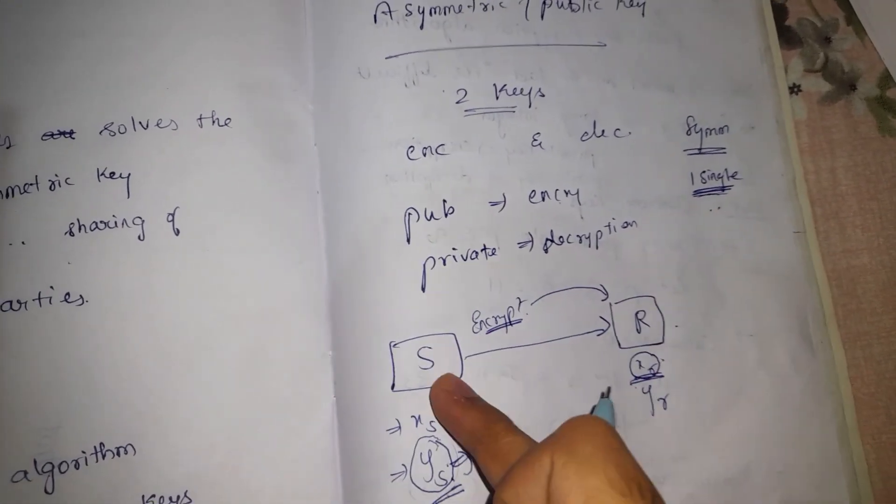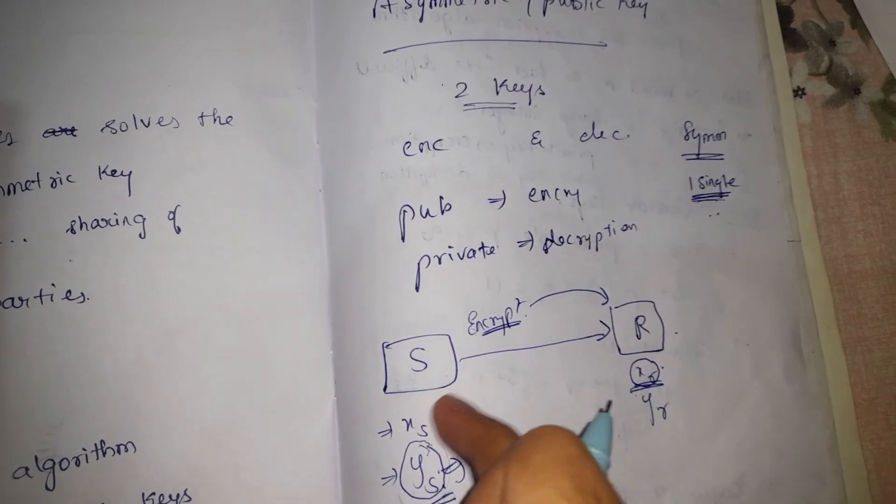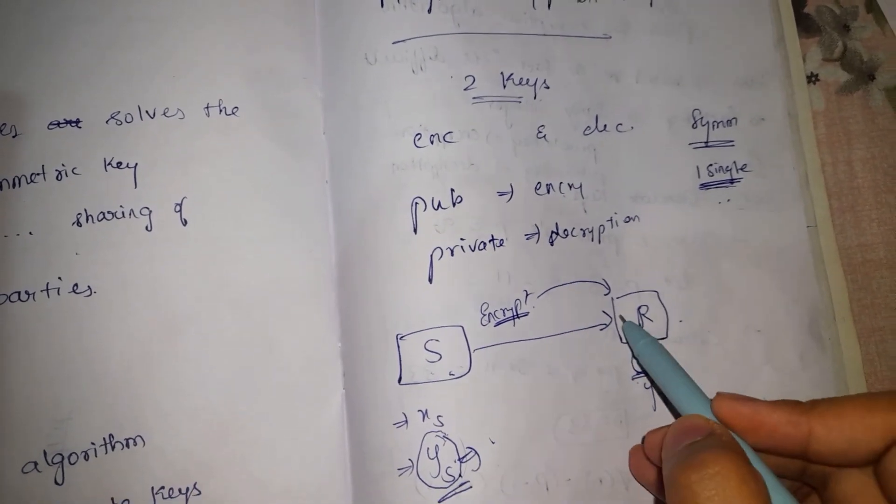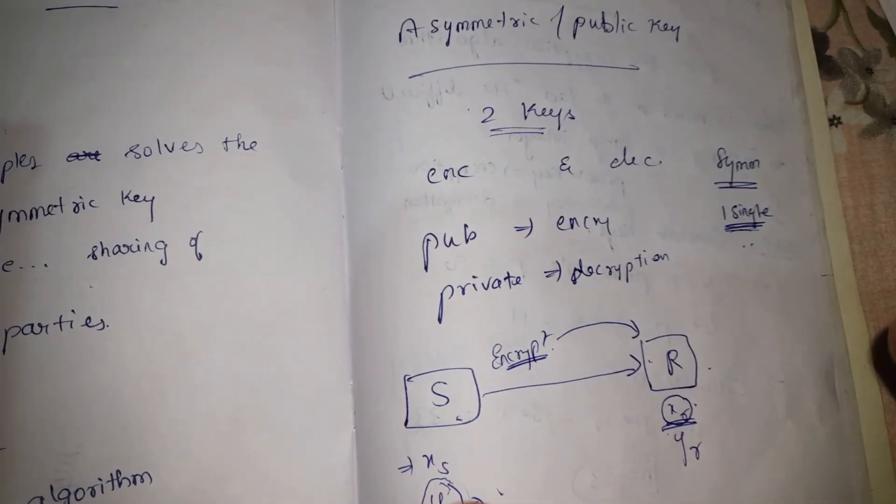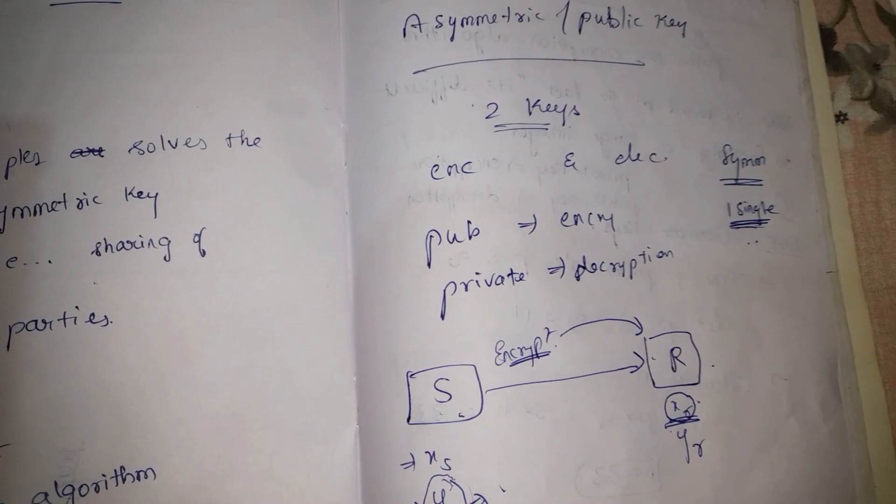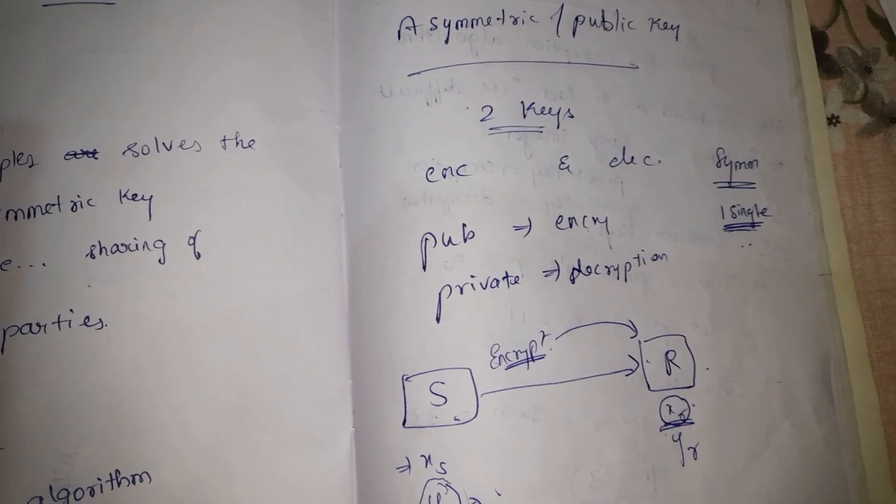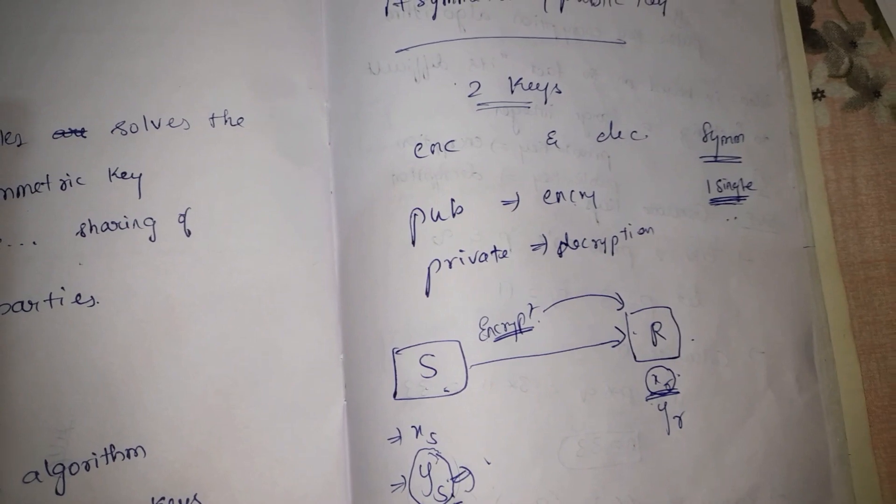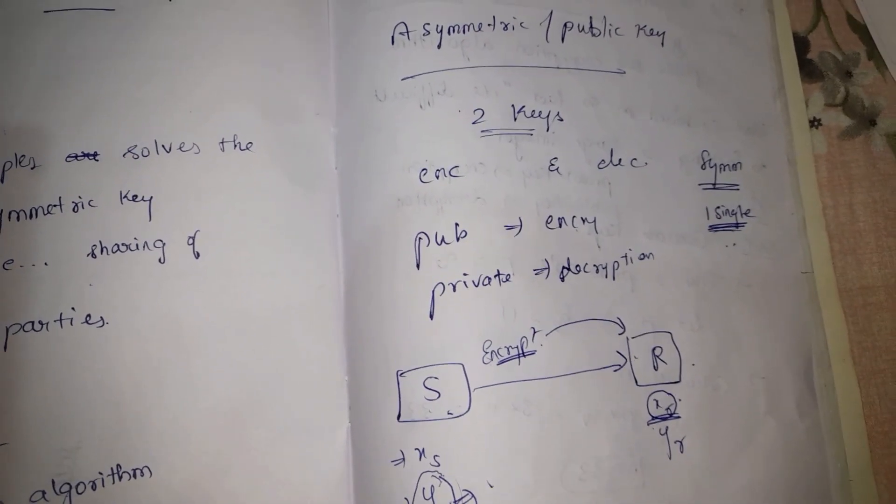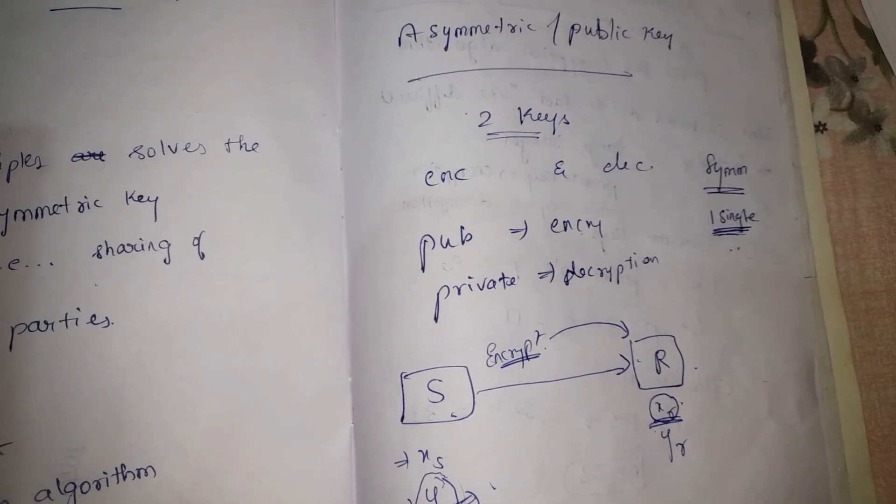During the encryption and decryption process, the keys are also somehow exchanged between the two parties, which is not safe. Consider this hypothetical scenario: if the attacker somehow manages to get hold of the key, they can easily decrypt your messages and access the sensitive content which is in your messages.